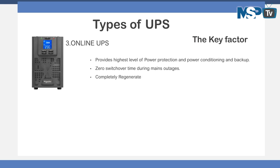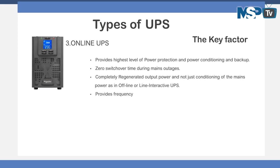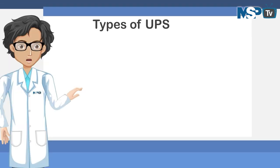Online UPS units produce completely regenerated output power — not just conditioning of mains power as in offline or line interactive UPS. They also provide frequency regulation, which is essential for operations with backup diesel generator sets. Overall effectiveness is 100%.